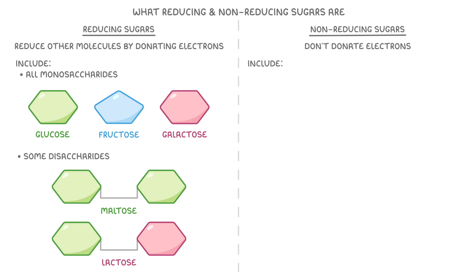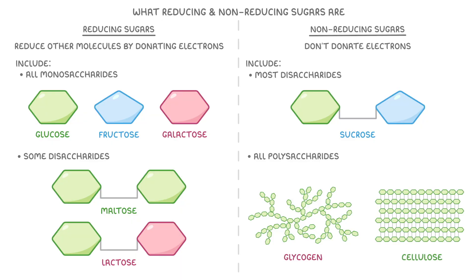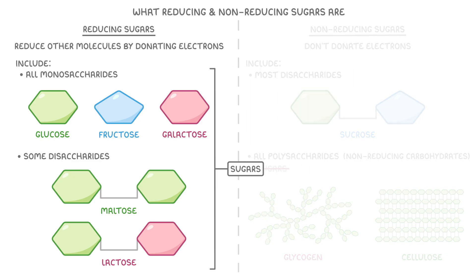Non-reducing sugars include most disaccharides, like sucrose, but also all polysaccharides, including examples like glycogen and cellulose. It's worth knowing that the correct term for polysaccharides is non-reducing carbohydrates rather than sugars, because the term sugar actually refers to simple carbohydrates, so things like monosaccharides and disaccharides.